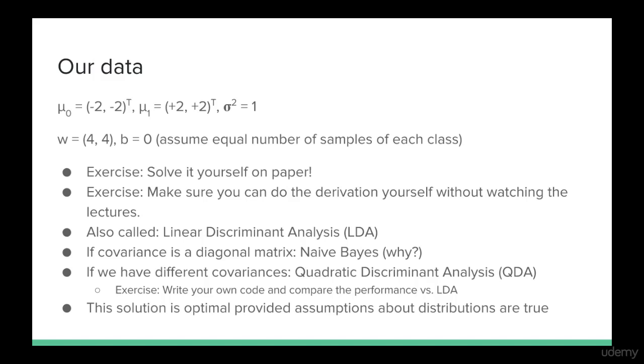A couple quick extra notes. This method is also called linear discriminant analysis, or LDA. If the covariance is a diagonal matrix, as we've seen in the numerical example above, this is also an instance of Naive Bayes. You should be able to figure out why this is.